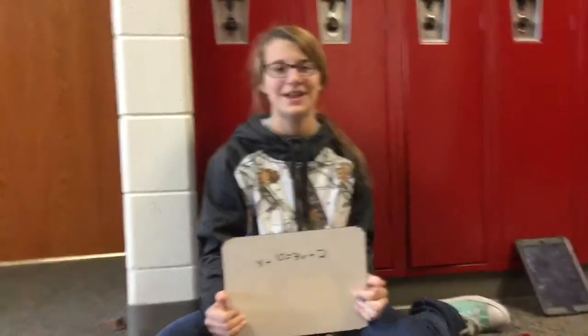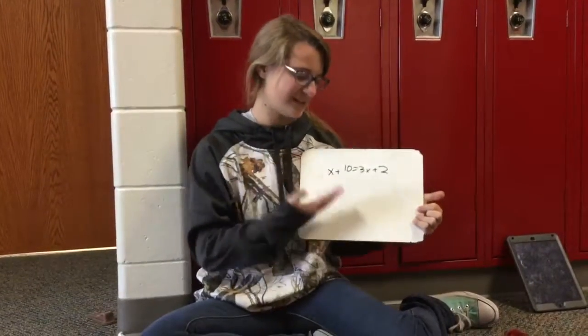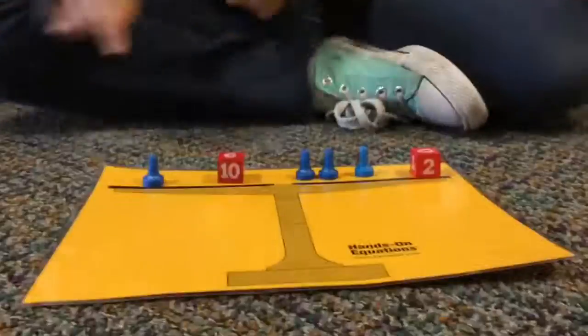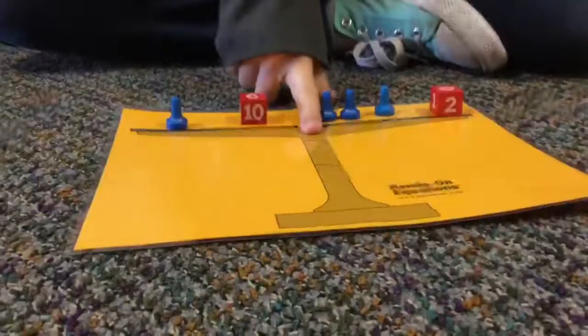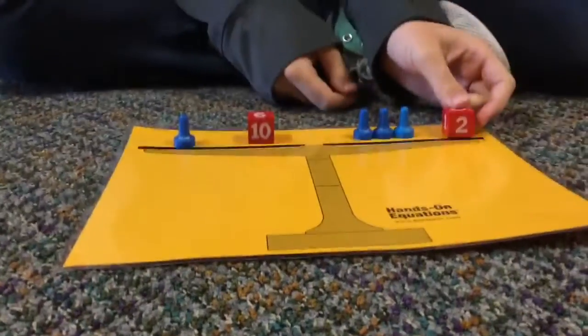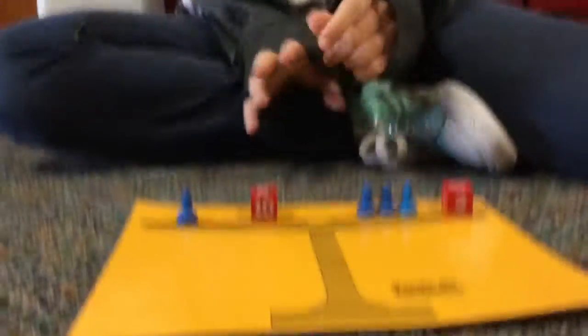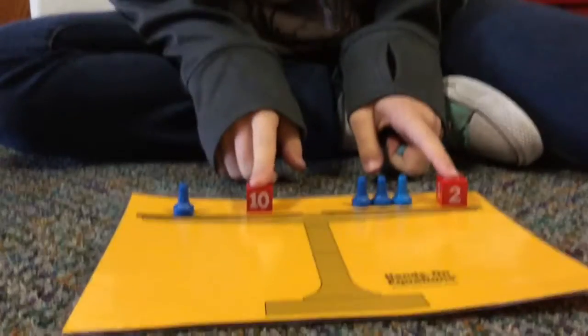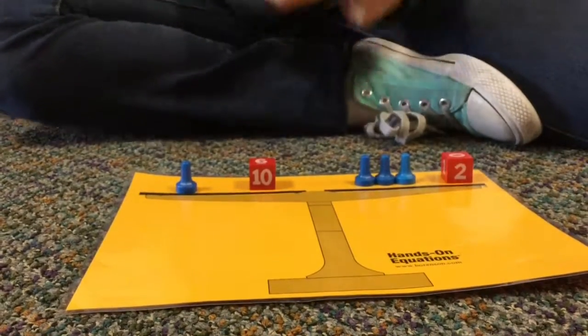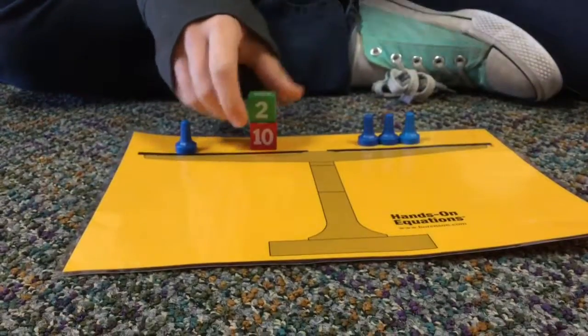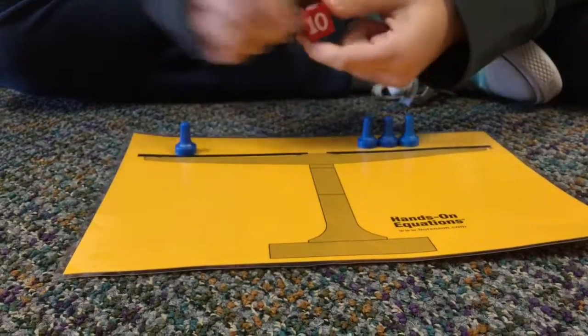Now, the first problem we're going to be doing is x plus 10 equals 3x plus 2. Here we have x plus 10 — the right between the scale would be the equal sign — equals 3x plus 2. The first thing we want to do is get rid of the smaller number, so we're going to add a negative 2 to both sides, making this a positive 0 and this an 8.